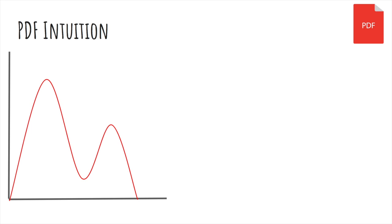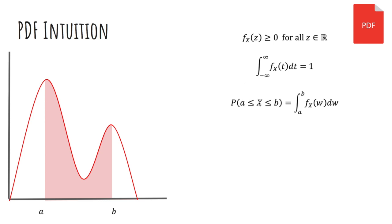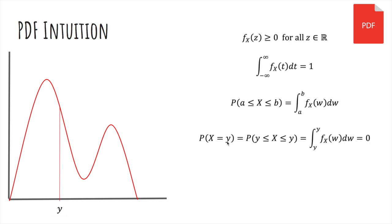Here's the intuition. This is a probability density function, or PDF, and it looks something like this. The first thing is that it's non-negative, just like a probability mass function is always non-negative. The integral — the area under the entire curve — is equal to 1, just like the sum of all the probabilities in a discrete random variable equals 1. The probability that x lies in an interval a to b is simply the integral from a to b of the density function — the area between a and b. The probability that x is exactly equal to y is 0, because it's the integral on a single point.